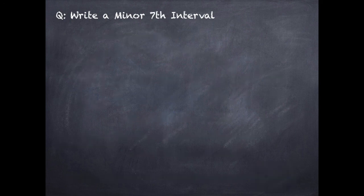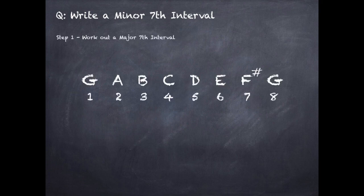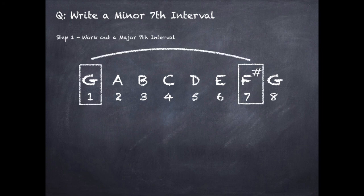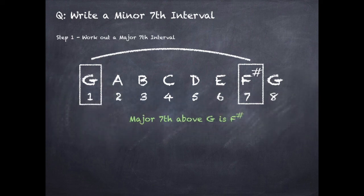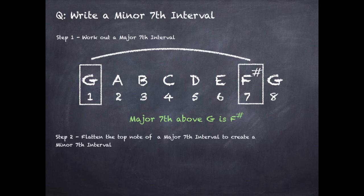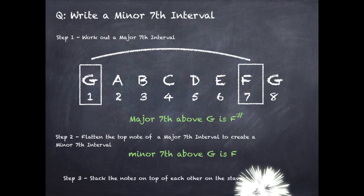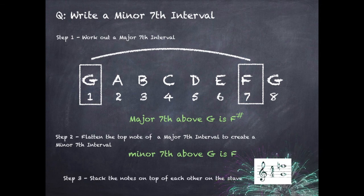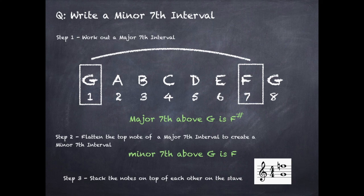To create a minor seventh interval: step one, work out the major seventh — from G to F sharp. Step two, flatten the top note: F sharp becomes F natural, so a minor seventh above G is F. Step three, stack the notes on the stave, remembering to put a natural sign next to the F to show it is F natural, not F sharp.